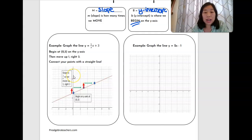So in this example right here, I ask you to graph the line y equals one third x plus three. So we're going to look at the three and this is going to tell us where to begin on the y axis. Okay, so we're going to begin at zero three on the y axis. So there's going to be my first dot right here